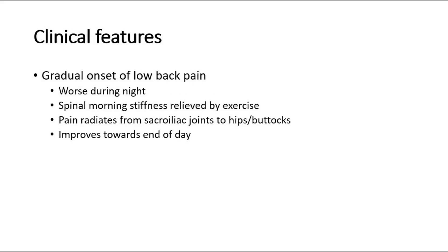The clinical features of ankylosing spondylitis: the typical patient is a man less than 30 years old who complains of gradual onset of lower back pain, worsened during the night with stiffness of the spine in the morning, which is relieved by exercise. This pain will radiate from the sacroiliac joint to the hips and buttocks, and usually improves towards the end of the day.